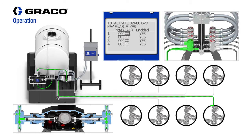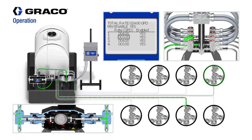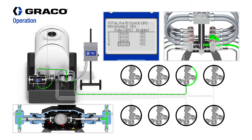The Harrier Plus MPI controller operates on a 60-second cycle, so it will cycle through the rest of the enabled solenoid valves and repeat the process until the total desired flow rate per day is achieved.